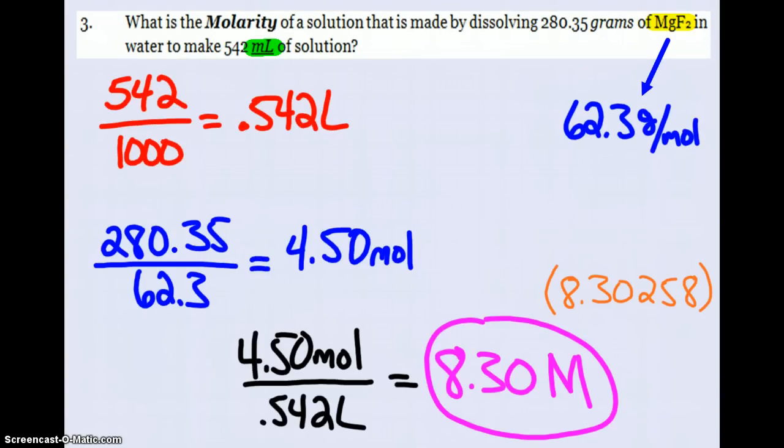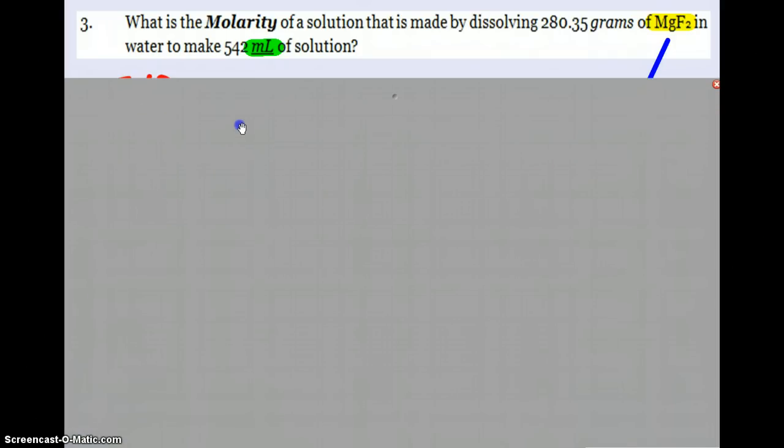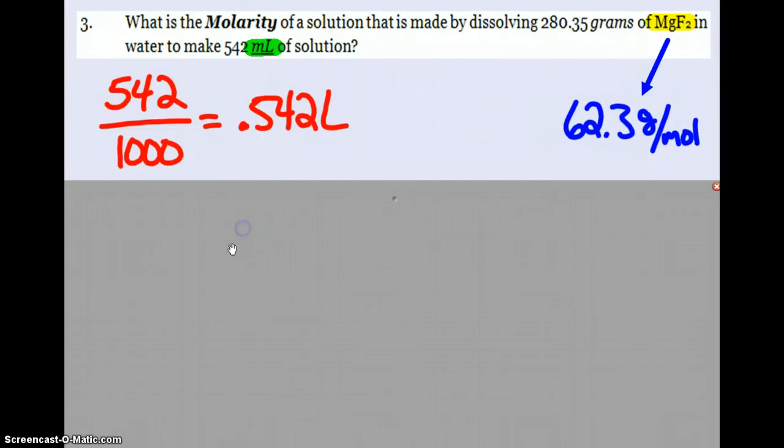Next page: what is the molarity of a solution that is made when we dissolve 280.35 grams of magnesium fluoride into water to make 542 milliliters of solution? Now we've got to change grams to moles and we've got to change milliliters to liters.